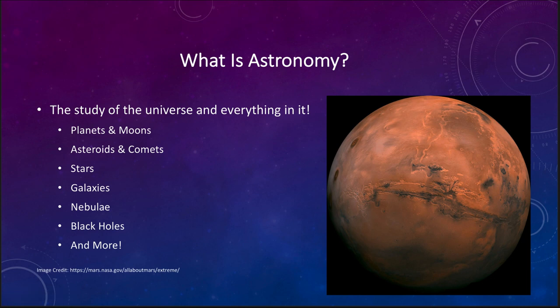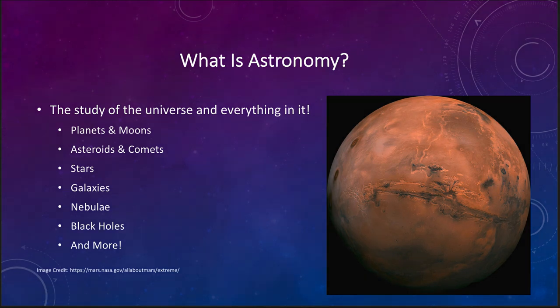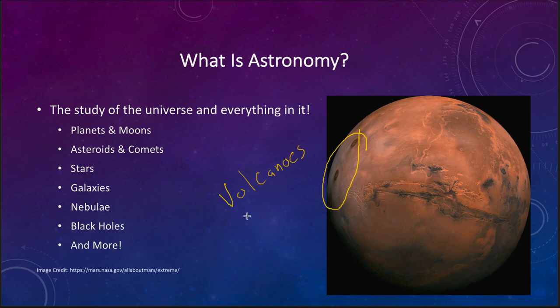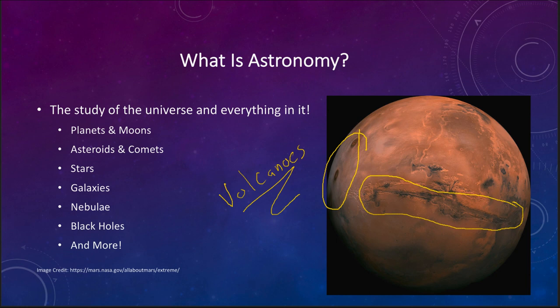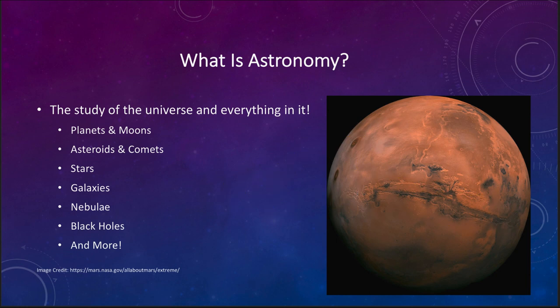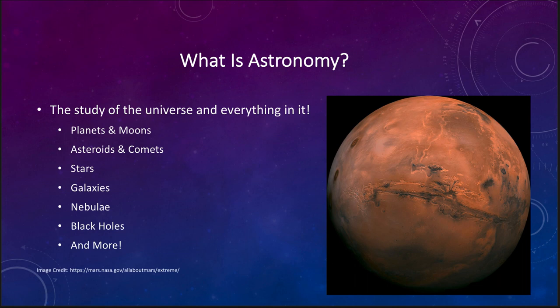We have planets and moons that we study in astronomy. Here is the planet Mars. Mars has some interesting features — we see great volcanoes on the side that have been active in the past, and a great rift valley called Valles Marineris, which would stretch across the entire United States if it were here on Earth. Mars also has polar caps and a thin atmosphere.